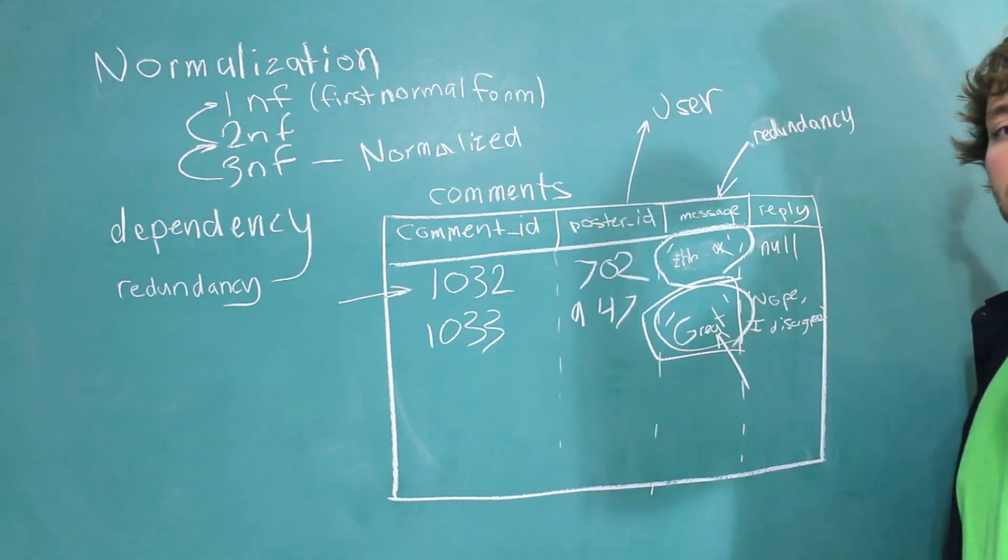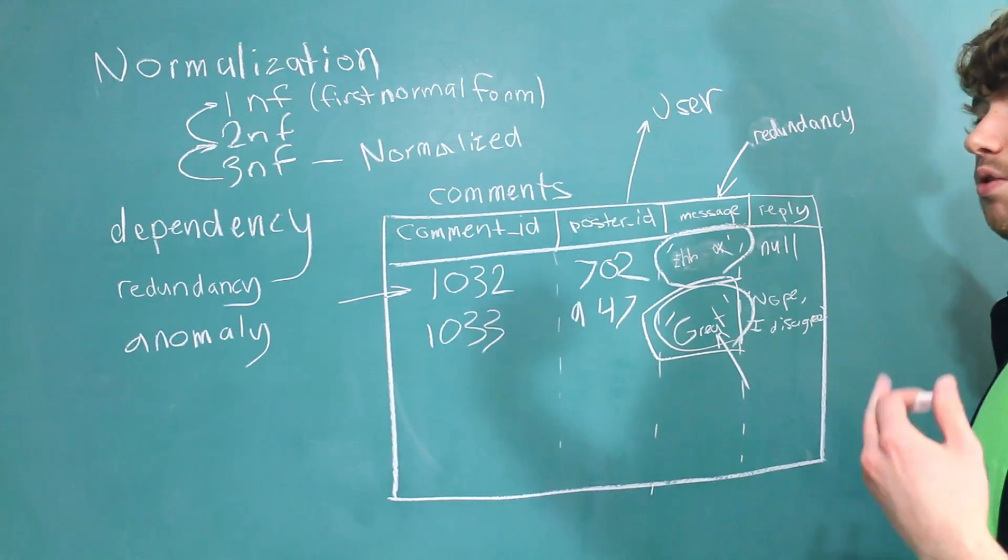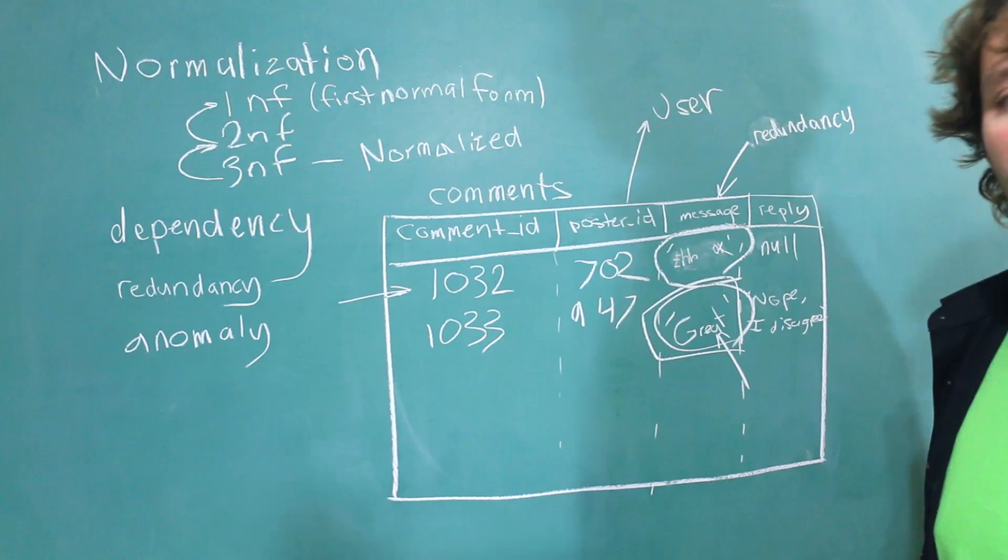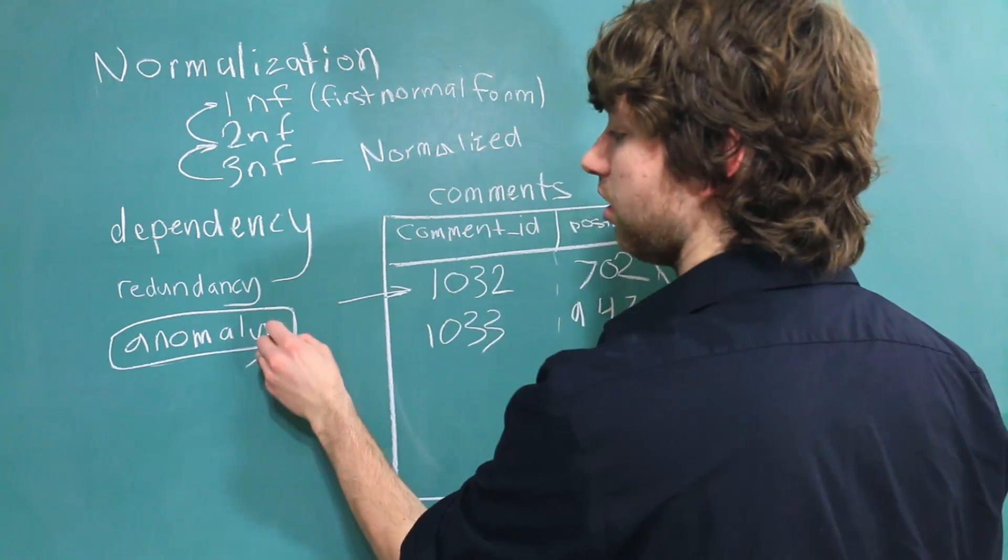This is an example of an anomaly. An anomaly is when something does not work the way it's expected to work. It's out of the ordinary. With database normalization though we can prevent anomalies.